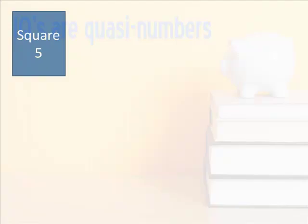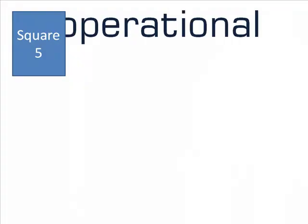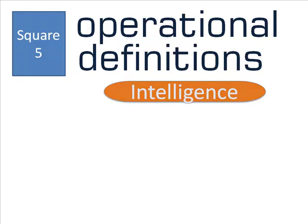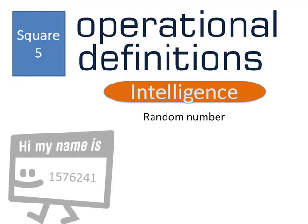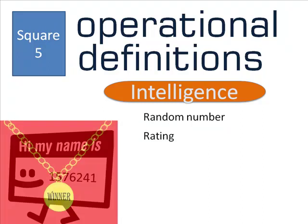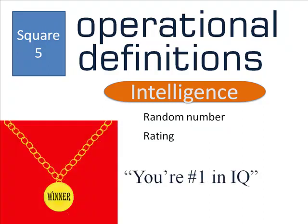Do you remember the operational definitions? What we did back in square five shows up here. If we had operationally defined intelligence as wearing a name tag with a randomly assigned number on it, IQ would be at a nominal level. If we had rated people as high, medium, or low levels of intelligence, we would be using an ordinal scale.